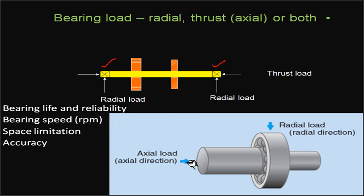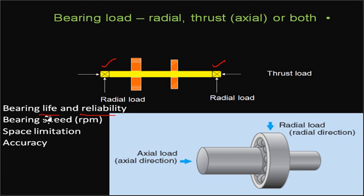An important parameter in bearing design is bearing life — how long a bearing is expected to last. When we select a bearing for an application, for example a fan, we expect a very long life. If the bearing is used in machine tools, even longer life is required. The most important considerations are life and reliability. If we use a bearing in a particular application or motor, it must perform reliably.